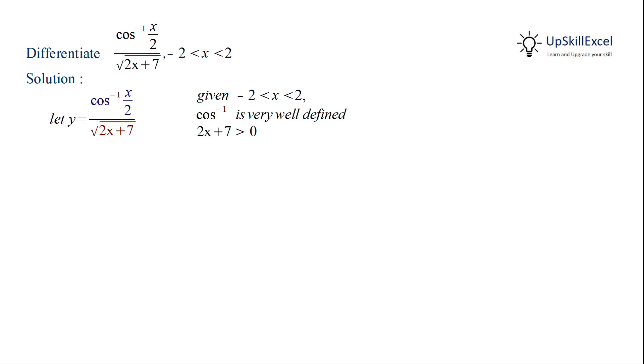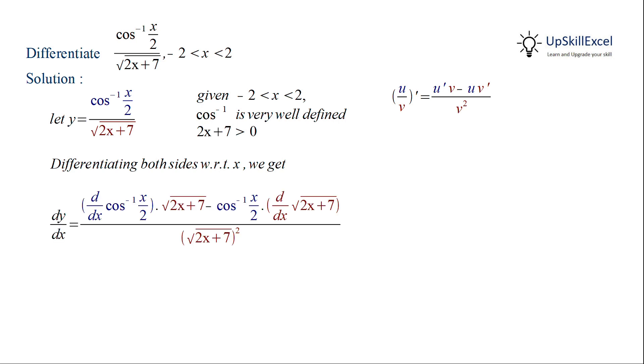So let y is equal to the given function. Now we see here that this is of the format of u by v. So we can differentiate this using the quotient rule formula, where u is equal to cos inverse x by 2 and v is equal to under root of 2x plus 7.